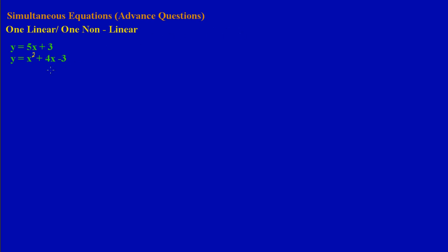Now let's get into it. As we have stated, since y is equal to some expression in x in equation one, and also in equation two, y is equal to some expression in x. So basically what I could say — I'm going to equate equations one and two. I tend to have the habit of writing the equation in y that has the quadratic first.